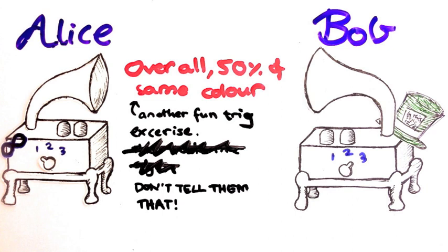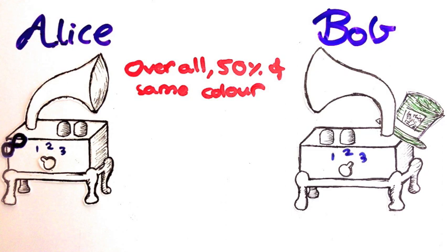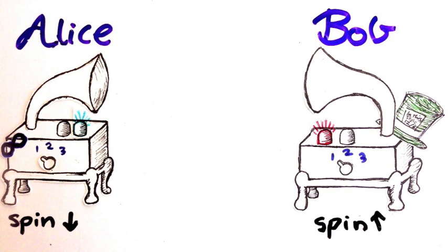OK, so now we're going to see if a local theory could explain this result. Firstly, let's think about what happens when Alice and Bob happen to pick the same axis. A and B have to have opposite spins in that case.